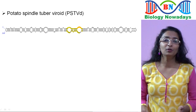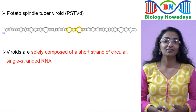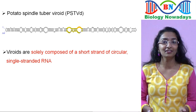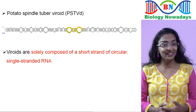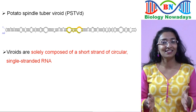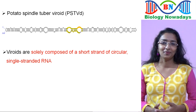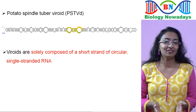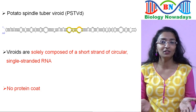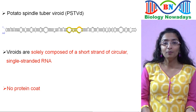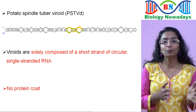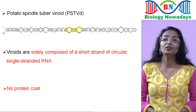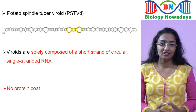Viroids are also non-cellular. They are composed of single-stranded RNA — a viroid is essentially just a strand of RNA. What makes a viroid different from a virus is the absence of a protein coat. Since viroids are also non-cellular like viruses, they were not included in Whittaker's classification.